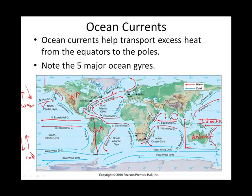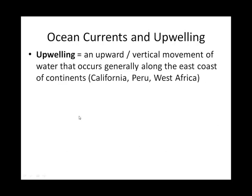The next slide talks about upwelling. Where we have cold ocean currents coming from the poles — like the Peruvian current and the California current — we have something called upwelling. What upwelling is: a surface current moves water away from the coast, and it brings colder water up along the coast. Essentially, it's a vertical movement of water — nice, cold, nutrient-rich water that comes up from below and cools the coast.